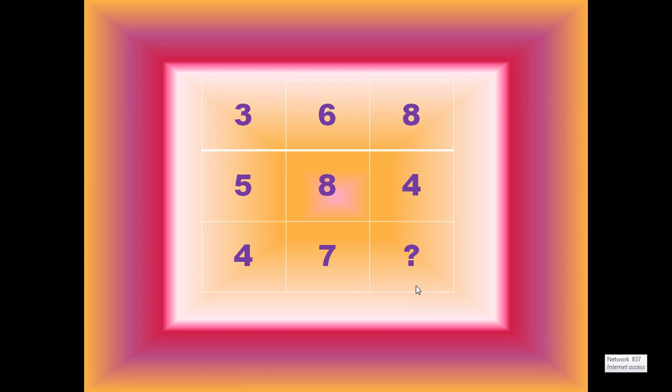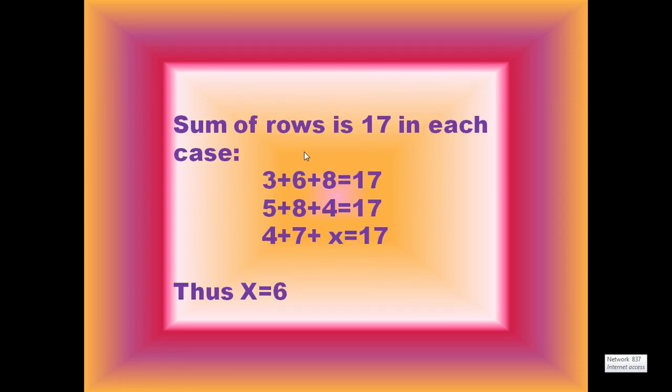I describe them one by one. This is our first logic. First of all, we sum up rows, which is 17 in each case. That is, 3 plus 6 plus 8 equals 17. 5 plus 8 plus 4 equals 17. So 4 plus 7 plus x equals 17, so here the value of x equals 6.